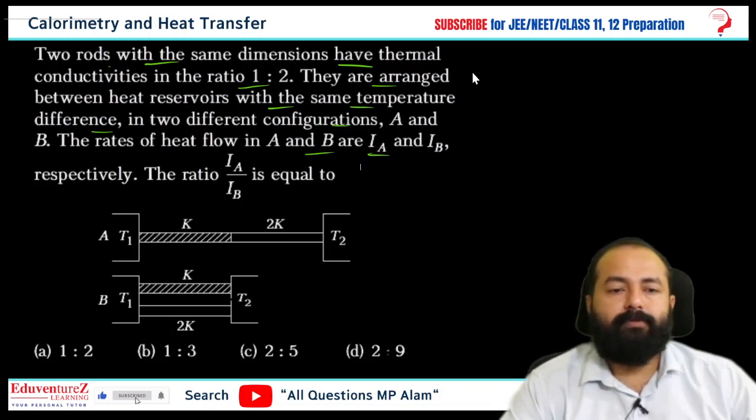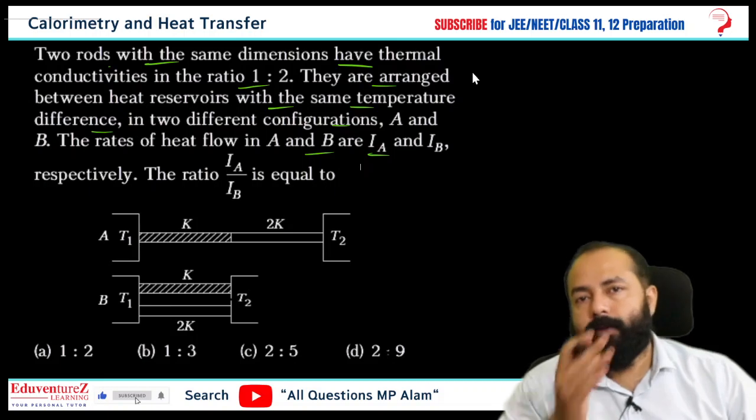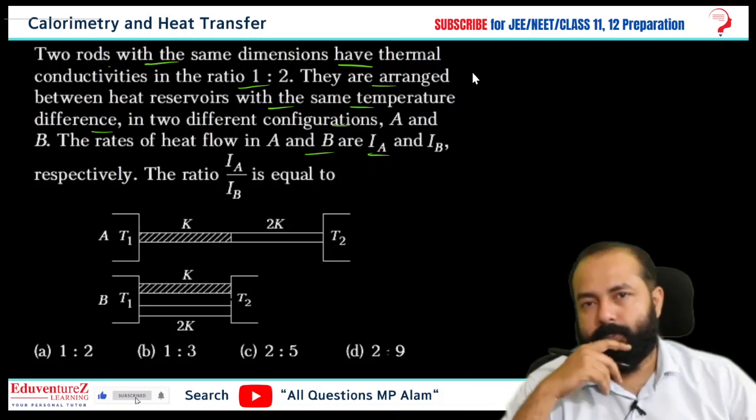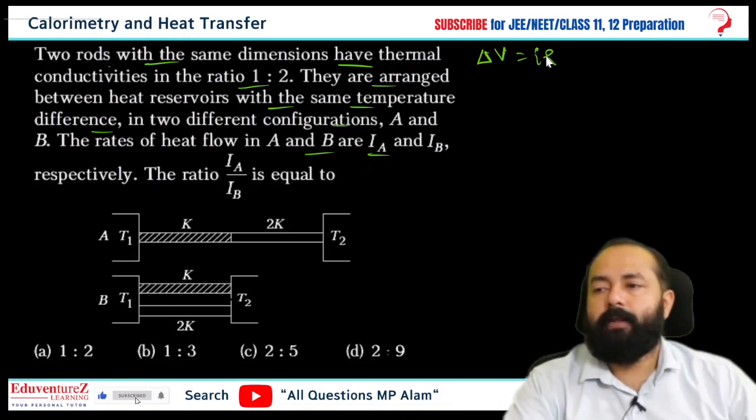The first condition is series combination of rods and the second condition is parallel combination of rods. For electric current, we have studied delta V equals IR, Ohm's law, or I equals delta V by R. That means I here is electric current, so it's an analogous equation.